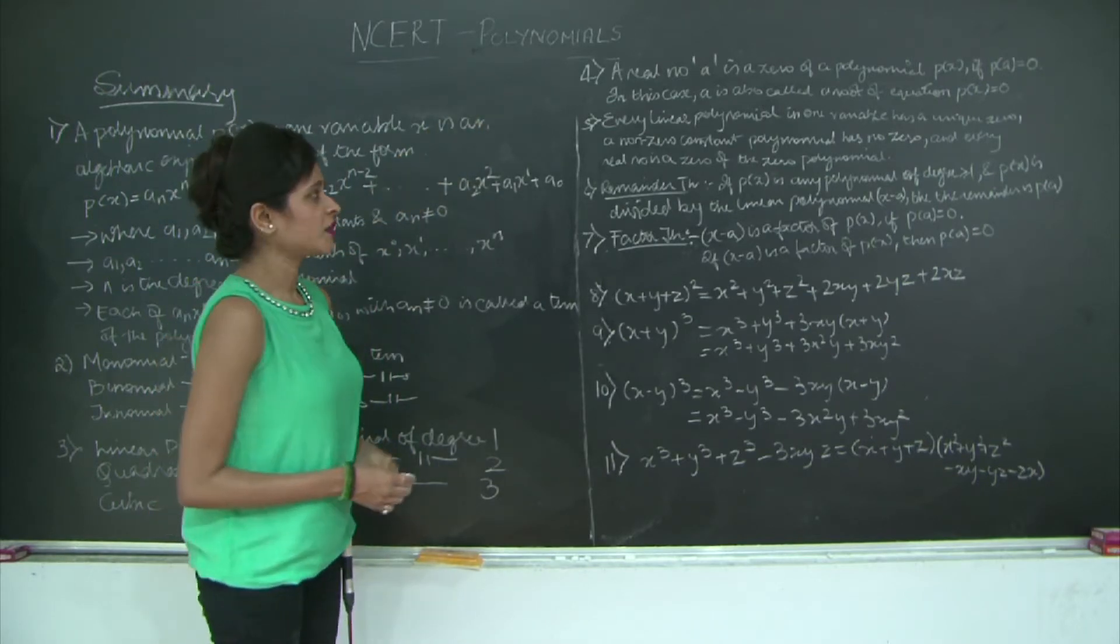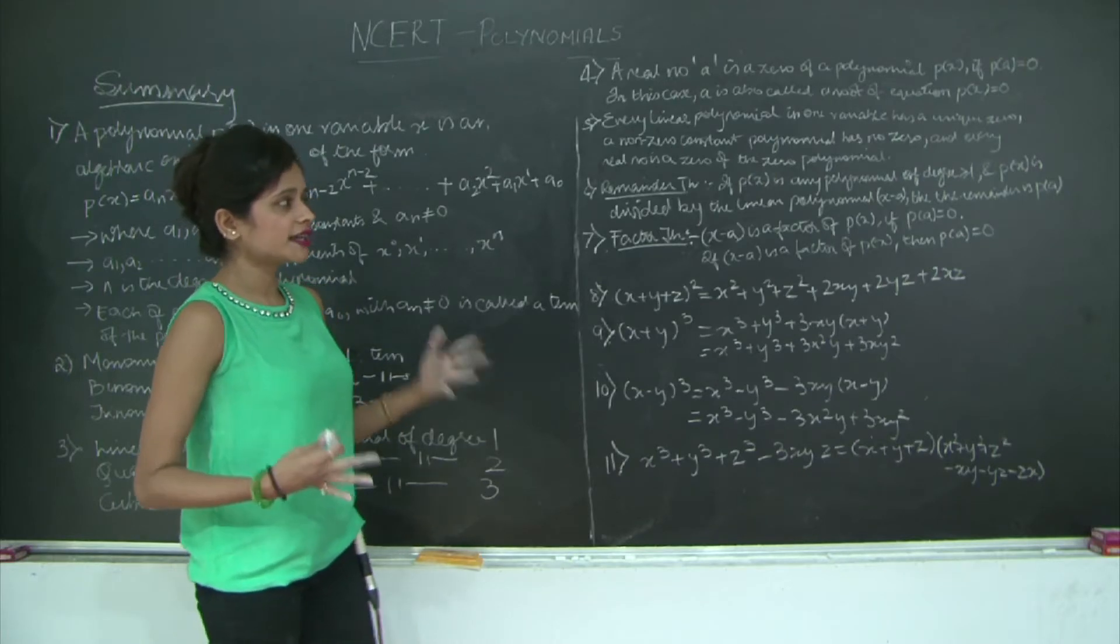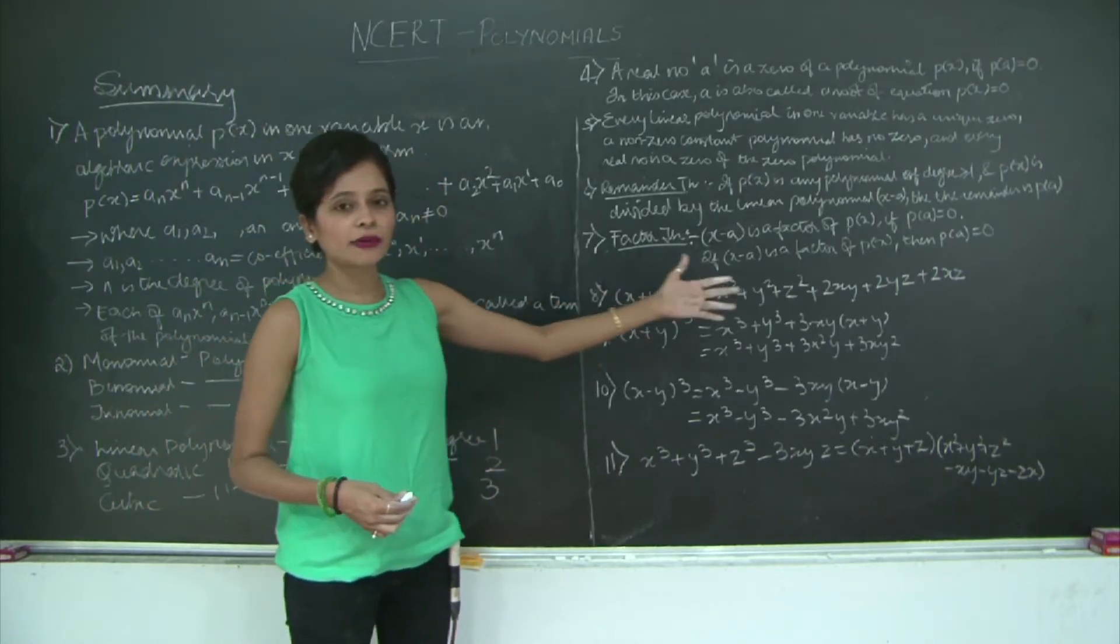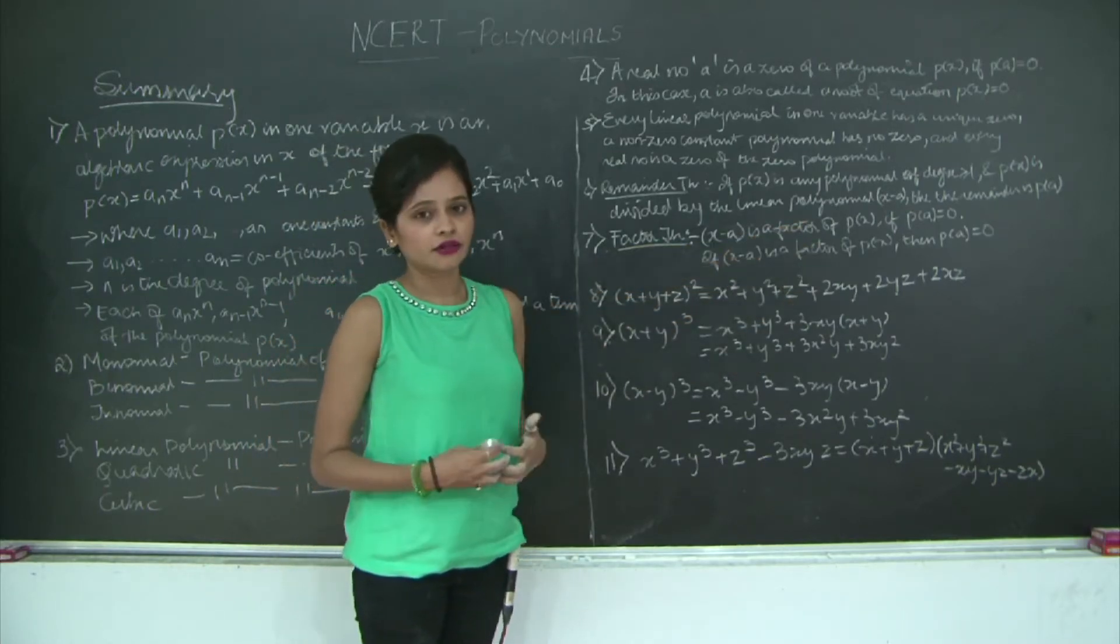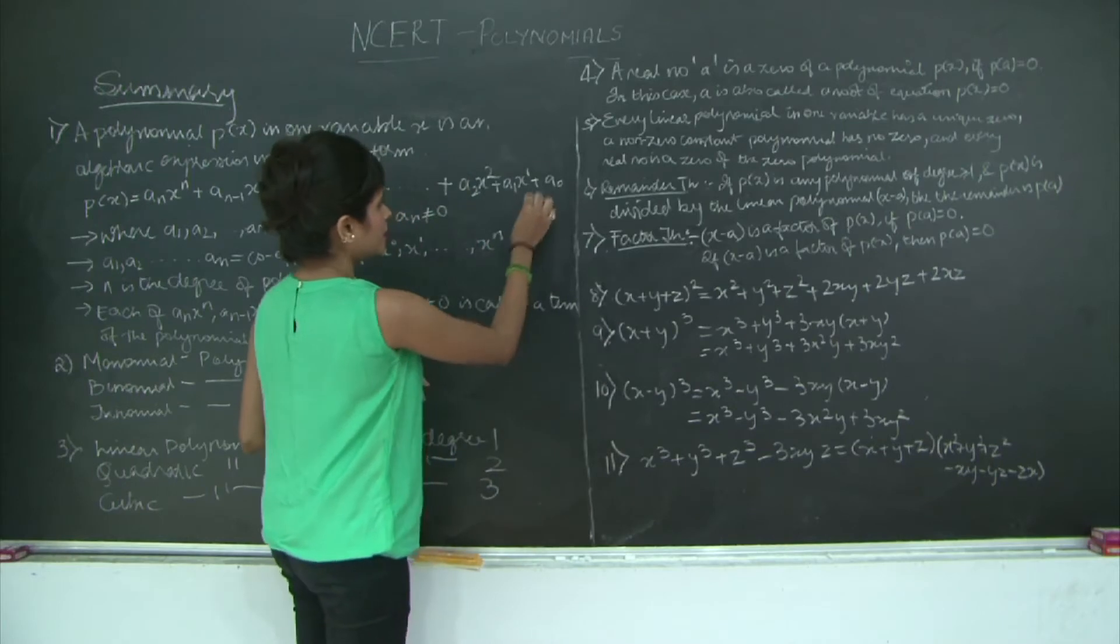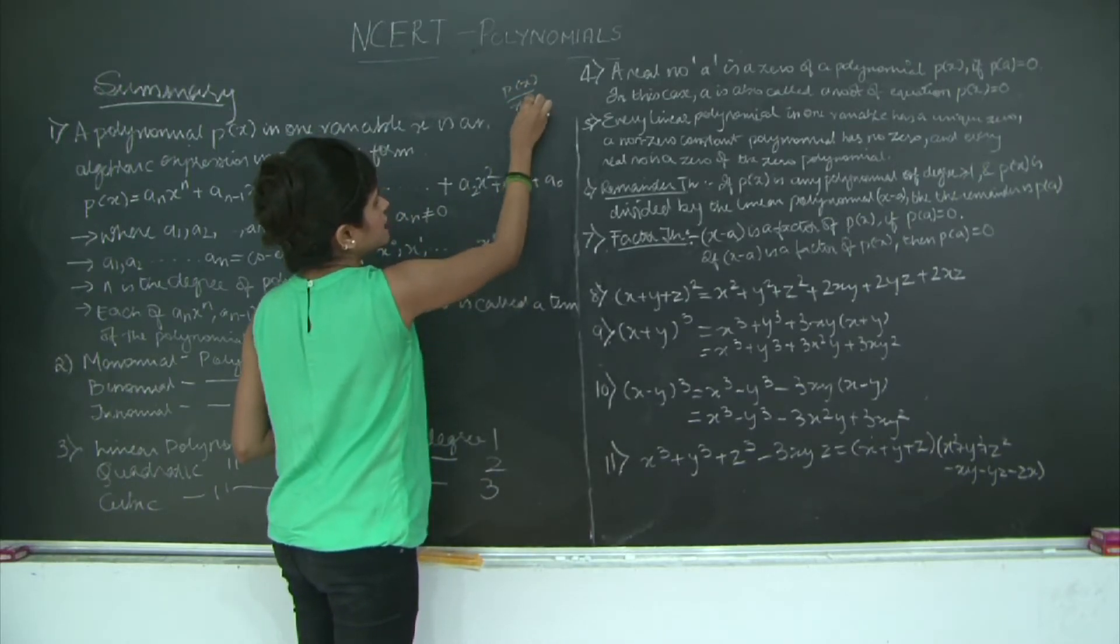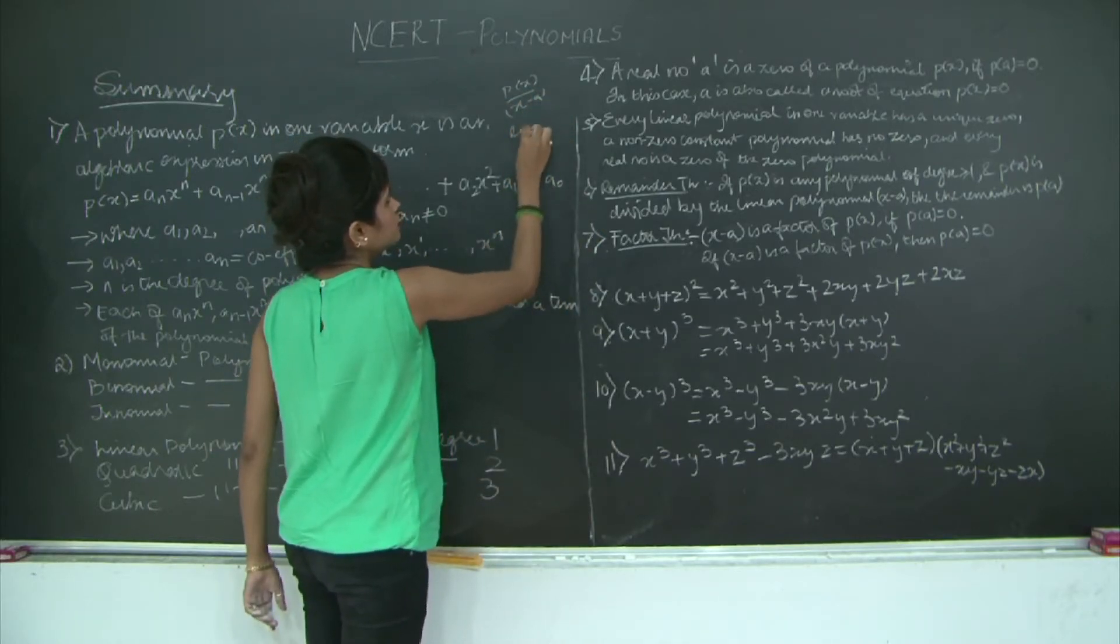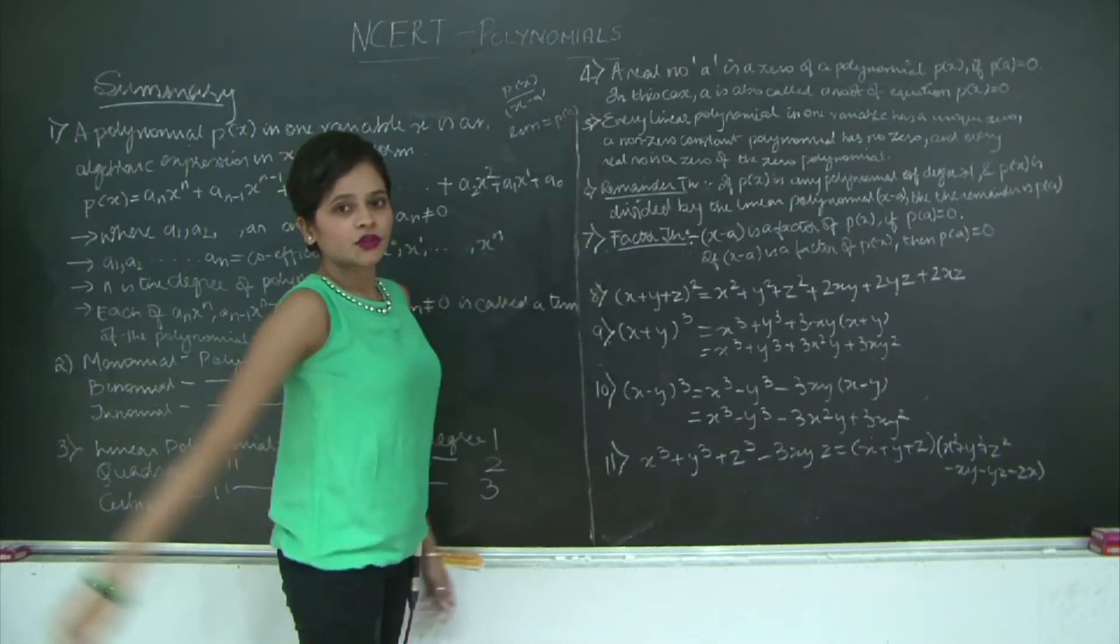Then, remainder theorem. If P(x) is any polynomial of degree greater than or equal to 1 and P(x) is divided by the linear polynomial x - a, then the remainder is P(a). If I have P(x) and I am dividing it by x - a, then the remainder will be P(a).